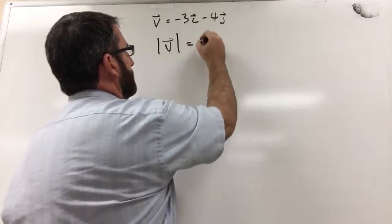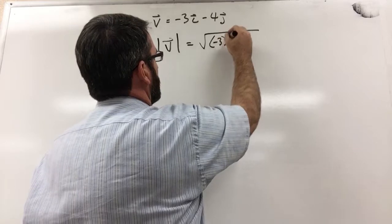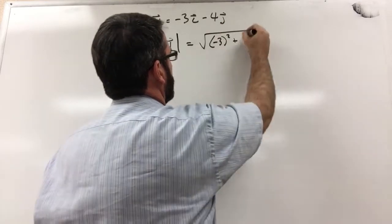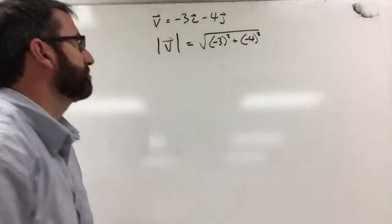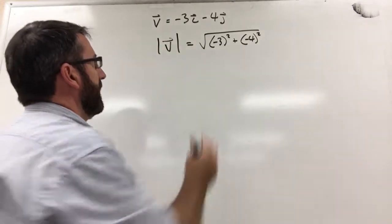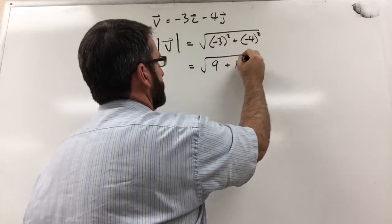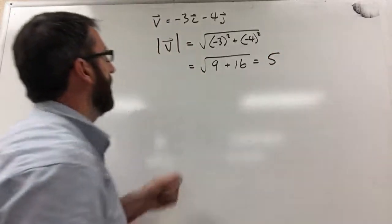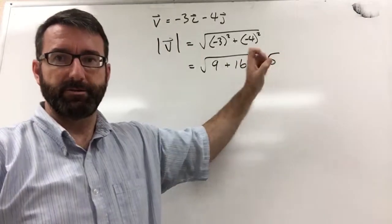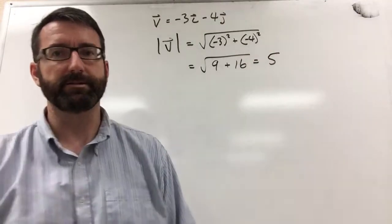And that's just going to be equal to the square root of v1 squared plus v2 squared. So that's the square root of 9 plus 16, which is 25. The square root of 25 is 5. So our magnitude, the magnitude of this vector is 5, or the length of the vector is 5.